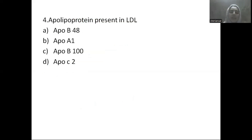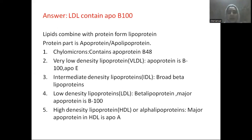Next question: apolipoprotein present in LDL — Option A: ApoB48, Option B: ApoA1, Option C: ApoB100, Option D: ApoC2. Apolipoprotein present in LDL is ApoB100. LDL is the low density lipoprotein, also called beta lipoprotein, and its major apoprotein is B100.